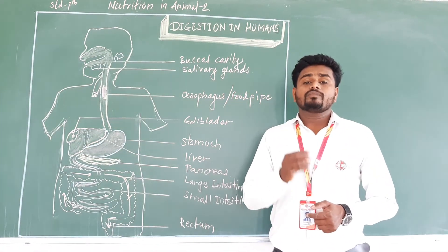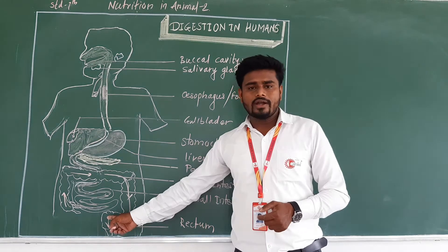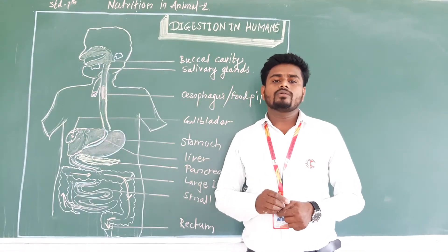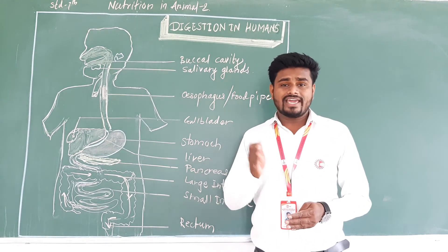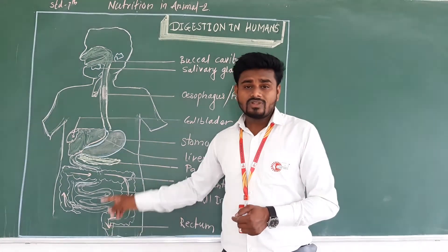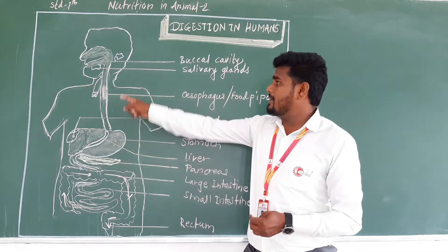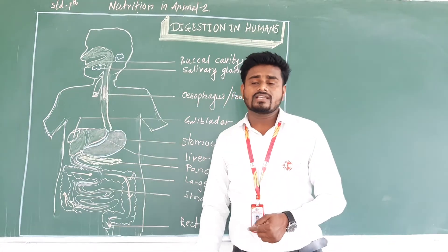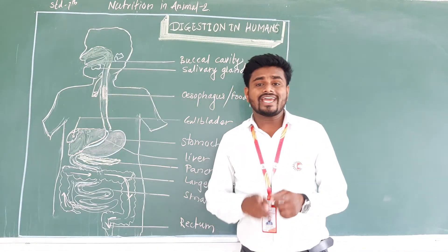The rectum is the place where unwanted or undigested food material is stored. After that, the undigested food material is expelled through the anus. In this way, the process of digestion starts with the buccal cavity and ends with the anus. All these parts together form the alimentary canal.